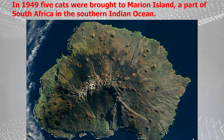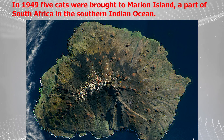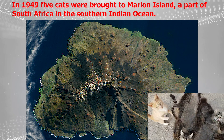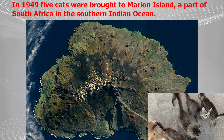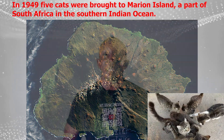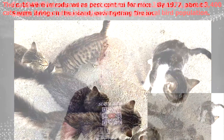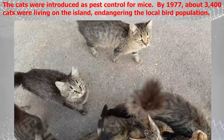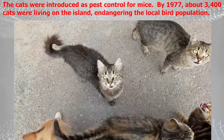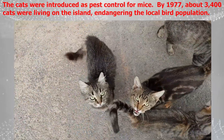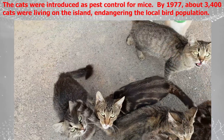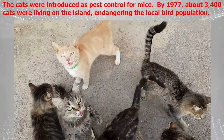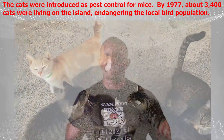For example, in 1949 five cats were brought to Marion Island, a part of South Africa in the Southern Indian Ocean. The cats were introduced as pest control for mice. By 1977, about 3,400 cats were living on the island, endangering the local bird population.